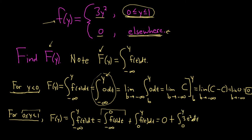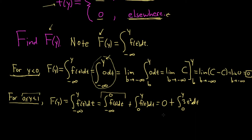Note that we use t as the dummy variable of integration — you can't have y in both the limit of integration and the integrand. Applying the power rule: integrating 3t² gives 3t³/3, which simplifies to t³. Evaluating from 0 to y: plug in y to get y³, subtract 0 cubed, giving y³. That's our second answer.